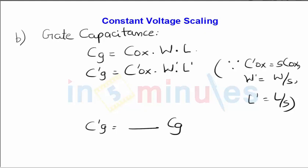Let's move on to gate capacitance. Gate capacitance is CG equals oxide capacitance times W times L. We know that oxide capacitance for constant voltage scaling increases by a factor of s, while width and length both are reduced by a factor of s. Thus, C'G equals s times COx times W times L divided by s squared. Therefore, the gate capacitance for constant voltage scaling reduces by s, so C'G equals CG divided by s.